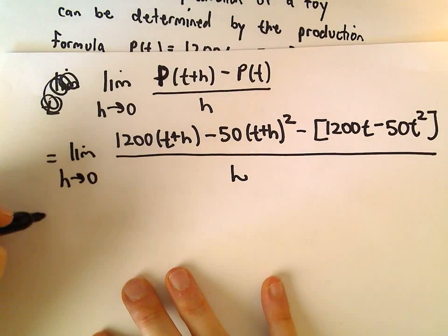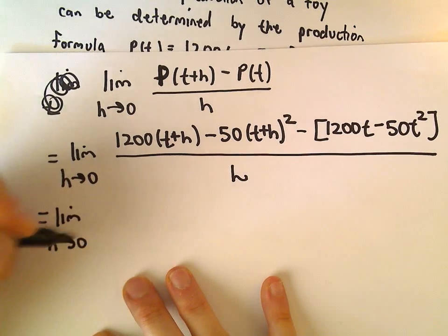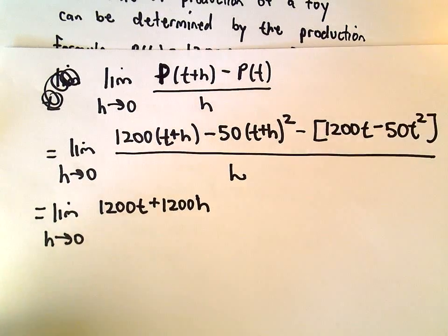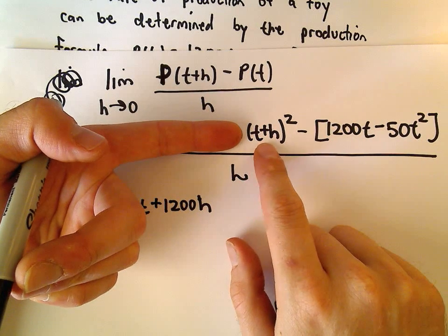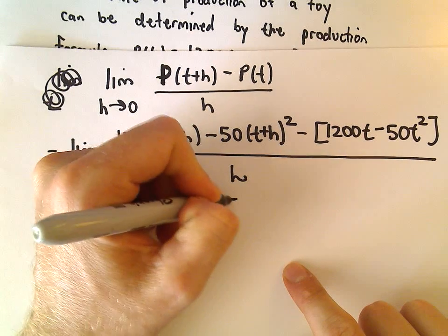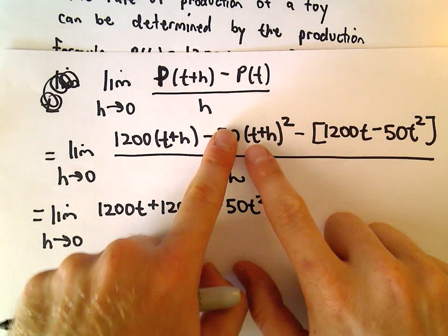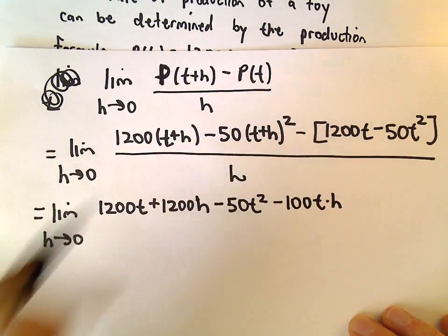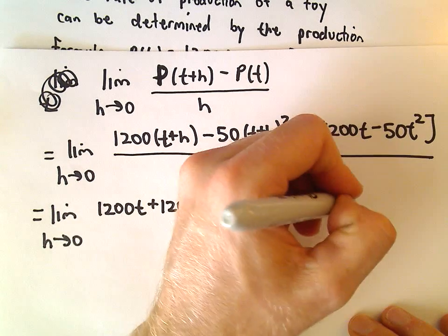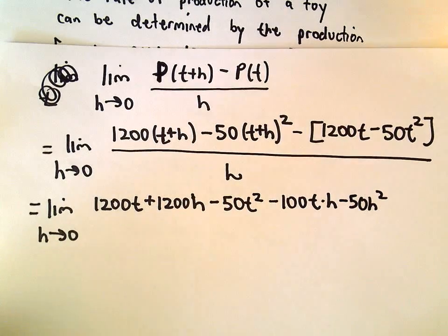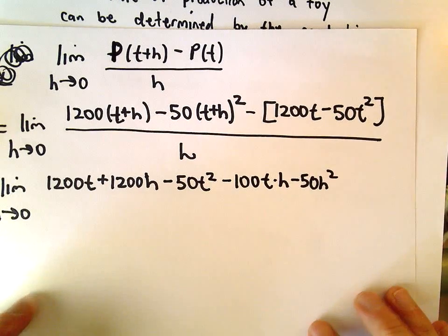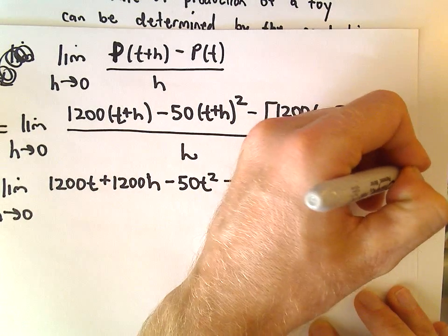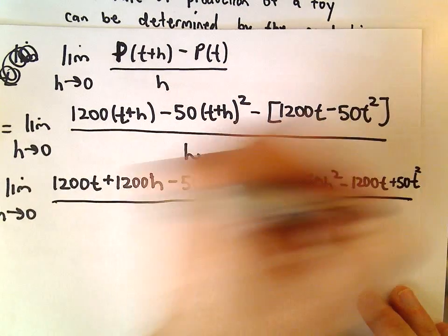Now we're just going to have to do a little bit of simplification here in our numerator. The limit as h approaches 0, we would have 1200t + 1200h when we distribute that out. I'm going to do a couple steps at once. If we foil our (t+h)(t+h), we would get t². The negative 50 would give us -50t². We would get (t+h) times (t+h), which would be 2th, times -50 will give us -100th. And then we would have h², times -50 will give us -50h². We still have to subtract away our other stuff, so we've got -1200t, and when we distribute, we would get +50t² over h.